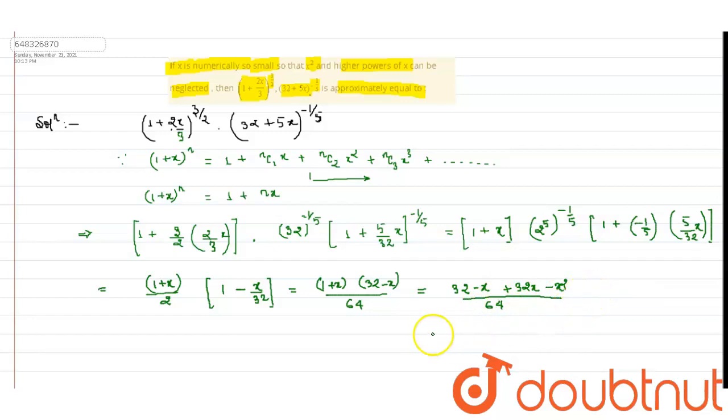Now we multiply this, all the multiplication in the numerator part. On multiplication we get 32 minus x plus 32x minus x... This will get 31x divided by 64.